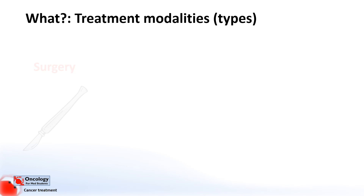The first category, surgery, aims to physically cut out the tumour. In general it's used as a curative treatment, but can also be used in certain circumstances as a palliative treatment in order to improve quality of life. For instance, if a tumour is causing significant symptoms that could potentially be helped, like perhaps if a tumour is causing a bowel obstruction or was pressing on the spinal cord.